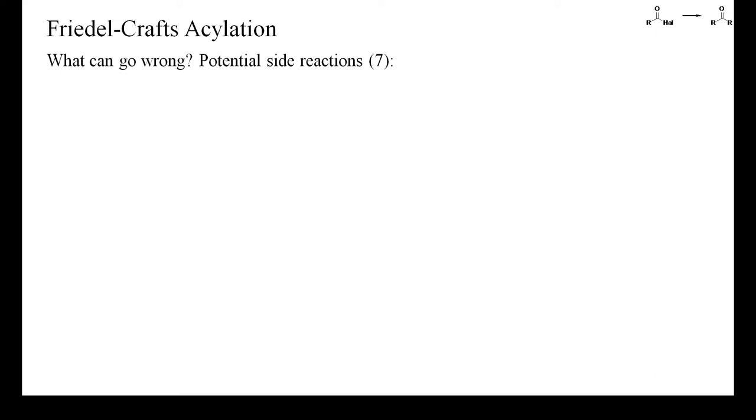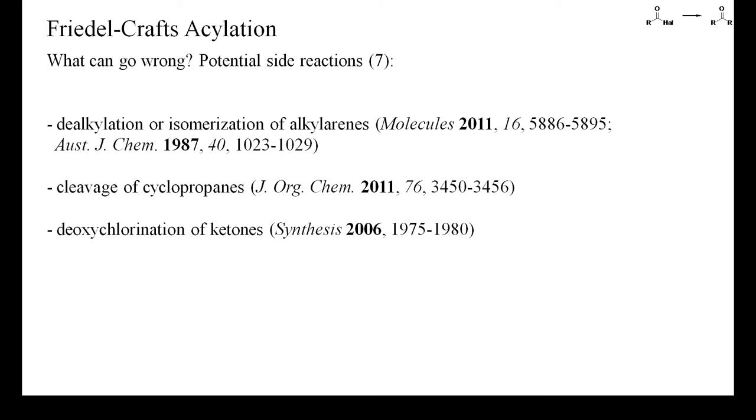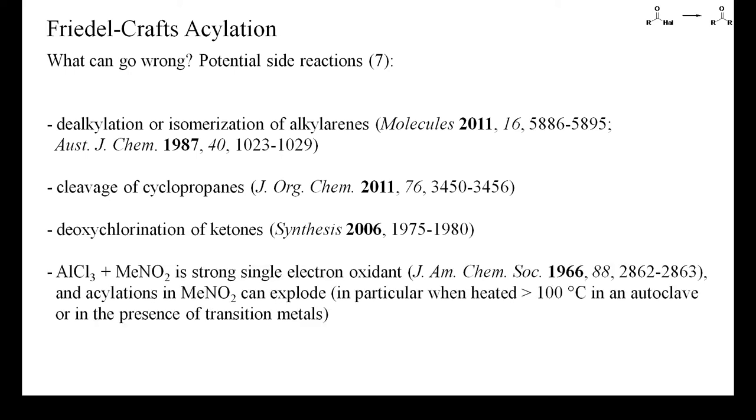In addition to the already mentioned isomerization of alkylarenes, other potential side reactions of Friedel-Crafts acylations include the cleavage of cyclopropanes and the conversion of ketones into vinyl chlorides. A number of accidents have been reported when using nitromethane as solvent for Friedel-Crafts acylations. A detonation occurred, for instance, when attempting to acylate ethylene in an autoclave with a mixture of aluminum chloride and nitromethane. The sensitivity of nitromethane may also be further increased by traces of transition metals. So, it's probably a good idea to avoid this solvent, in particular when dealing with readily oxidizable starting materials.